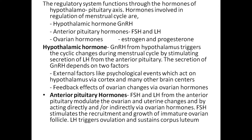Hypothalamic hormone: GnRH from the hypothalamus triggers cyclic changes during the menstrual cycle by stimulating secretion of LH and FSH from the anterior pituitary. Secretion of GnRH depends upon two factors: external factors like psychological events acting on the hypothalamus via the cortex, and the feedback effect of ovarian hormones.